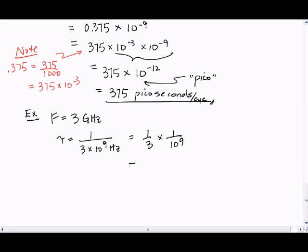1 over 3 we specify as a repeating decimal, 0.33, times 10 to the minus 9. Let's rewrite this as 330 times 10 to the minus 3 times 10 to the minus 9.